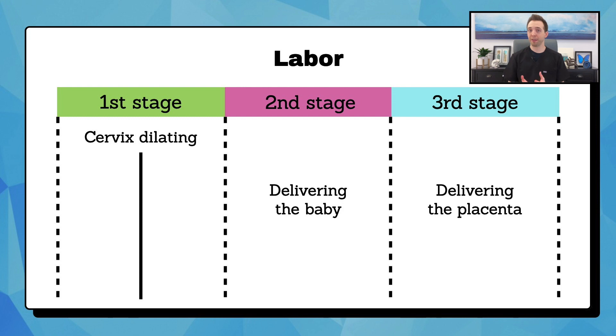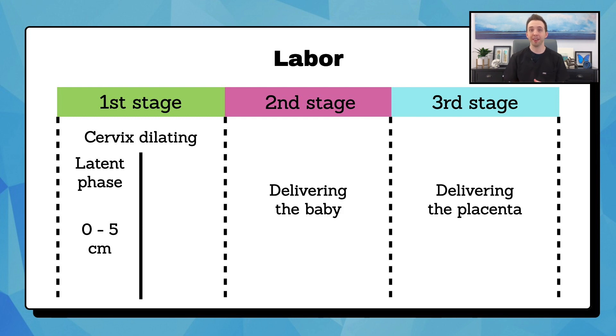The two phases of the first stage are defined based on how dilated the cervix is. The latent phase occurs from when the cervix is closed to 5 centimeters. The active phase is from 6 centimeters to fully dilated at 10 centimeters. Latent phase is known to be a much slower phase and can take several hours to days, while the active phase is usually much quicker, lasting only a couple of hours.